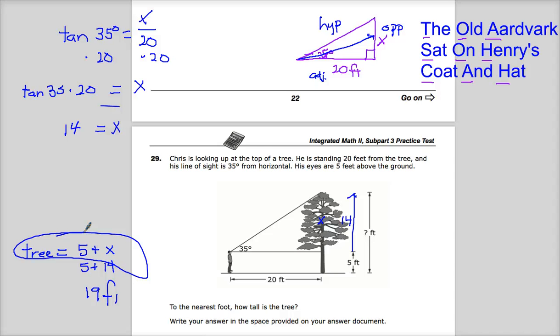And then you did all that work. You found the tangent. You figured out which trigonometric ratio to use tangent. You found the value of X and then you do all that work. And then you forget to add the 5 to it and you get it wrong.